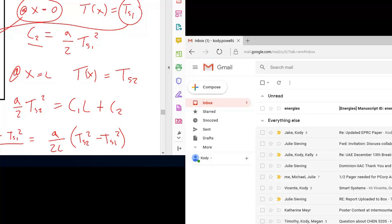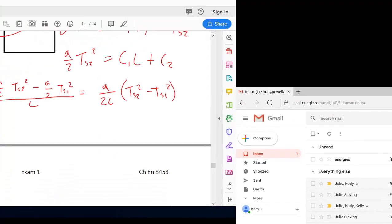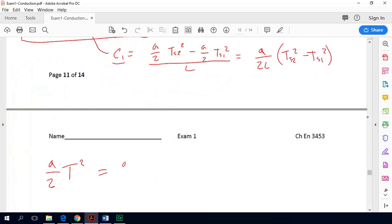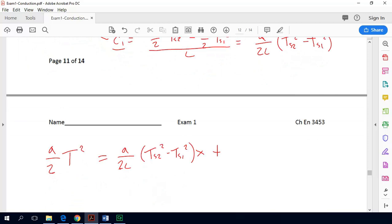So now we know what c1 is and we know what c2 is. So now we can plug both of those into here and get this full equation with our temperatures. So once we substitute in c1 and c2 we still get a divided by 2 times t squared is equal to substituting in c1 and c2 now. So here's our c1. So that is a over 2L times Ts2 squared minus Ts1 squared. So even though that looks like a reasonably complex equation, remember that all of these are constants and things that we know. So you can think of this as just one big lumped term which is c1. And then we have to multiply that quantity by x to get our x dependency in there. And then we just have our plus c2 which again was a over 2 times Ts1 squared.